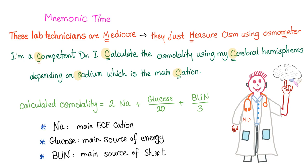The lab technicians measure osmolality using the osmometer. As a doctor, I calculate osmolality using the equation — depending on sodium, which is the main cation. Calculated osmolality depends on the big three: sodium, which is the main extracellular fluid cation; glucose, which is the main source of energy; and BUN, which is the main nitrogenous waste product.